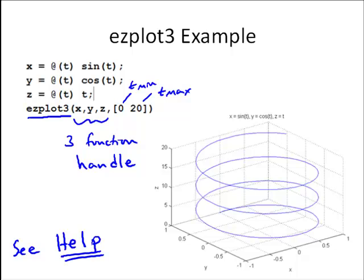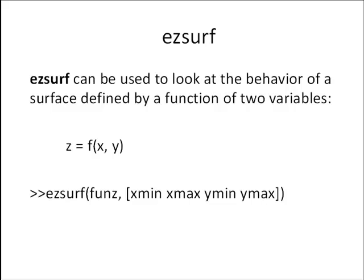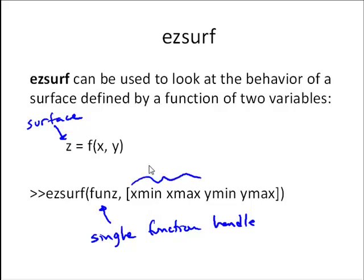The next thing I want to talk about is EasySurf. This is analogous to EasyPlot, but we can use this to look at the behavior of a surface defined by a function of two variables. So if we have a surface z, where z describes a surface, and the points on that surface are defined by the function, which is a function of x and y, we can use EasySurf. Now, this is a single function handle, fun z. And we have a range in x, or an x domain, and a y domain.